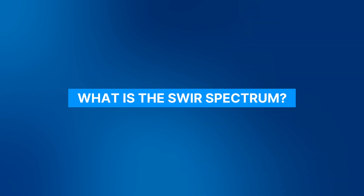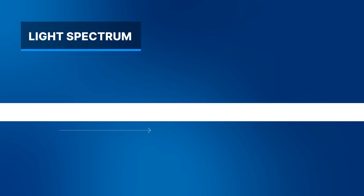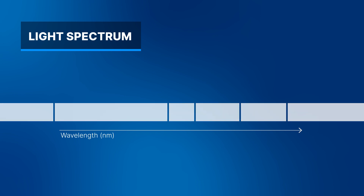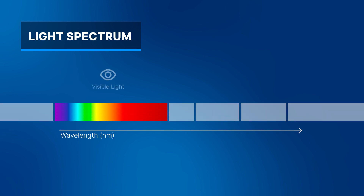What is the SWIR spectrum? Light is an electromagnetic wave characterized by its wavelength. The light spectrum is divided into spectral bands. Visible light ranges from 400 to 800 nanometers.